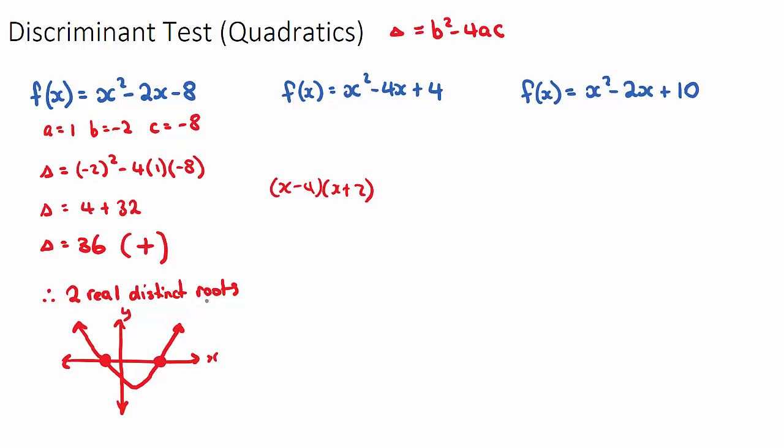So that's what the discriminant test does. It tells us straight away, without even solving or factorizing the equation, how many roots the equation will have.